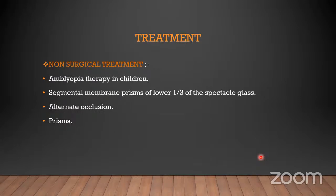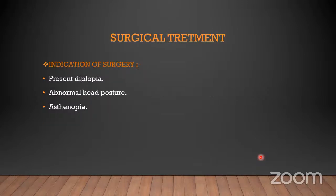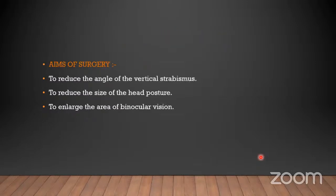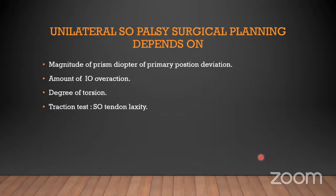Treatment — non-surgical: amblyopia therapy in children, segment membrane prism in the lower one-third of spectacle glasses, and alternate occlusion. Surgical indications are: presence of diplopia, abnormal head posture, and asthenopia. The aims of surgery are to reduce the angle of vertical strabismus, reduce the size of the head posture, and enlarge the binocular visual field. Unilateral SO palsy surgical planning depends on prism diopters of primary position deviation, amount of IO overaction, degree of torsion, and traction test for SO tendon laxity.